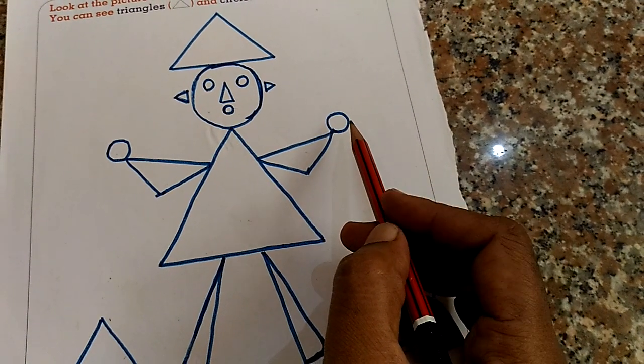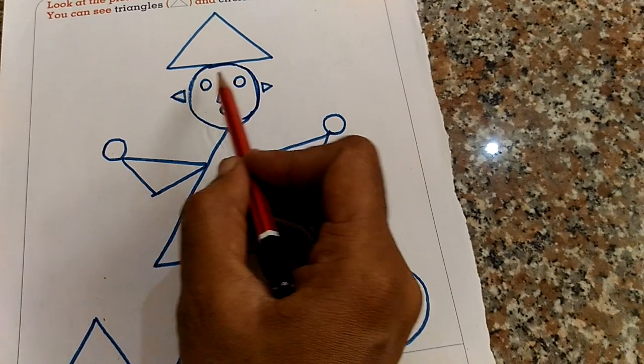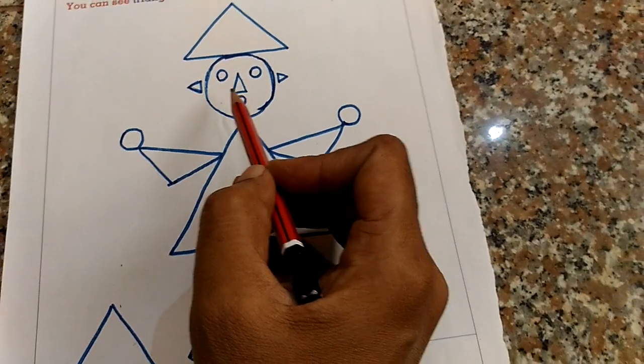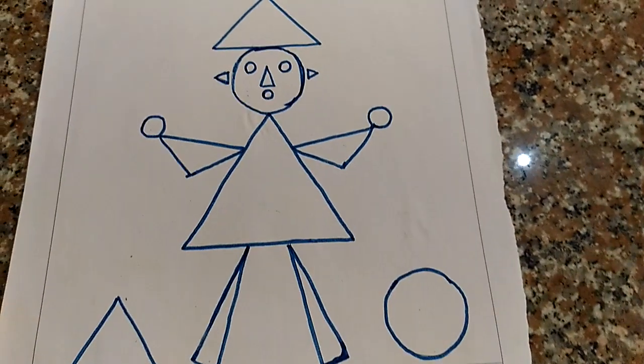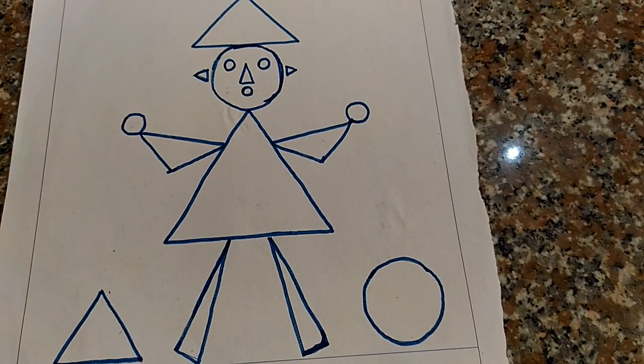6. You count one more time. 1, 2, 3, 4, 5, 6. How many circles? 6 circles.